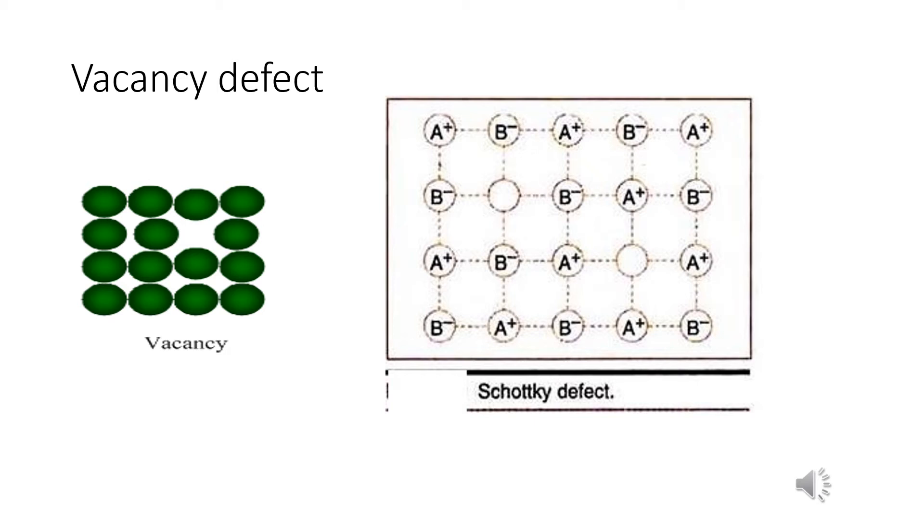Schottky defects generally appear in ionic crystals in which the positive and negative ions do not differ much in size. Example: sodium chloride crystals, cesium chloride, potassium chloride, silver bromide. This silver bromide shows both Schottky defect as well as Frenkel defect.